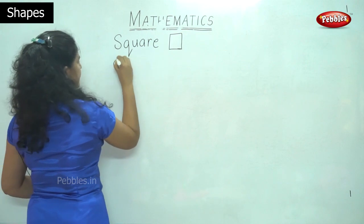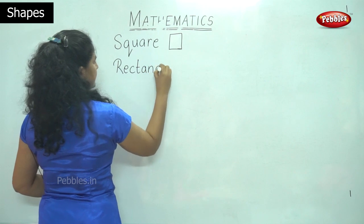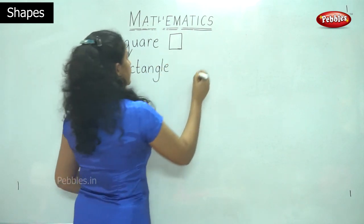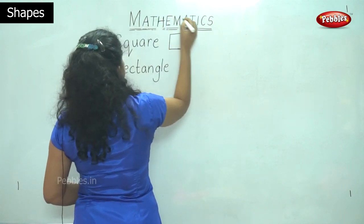Then we have studied about the rectangle which has the opposite sides equal. So we have the opposite sides equal.